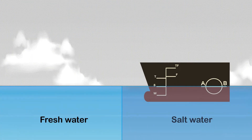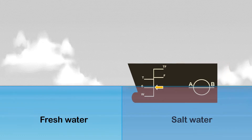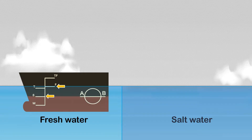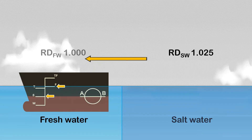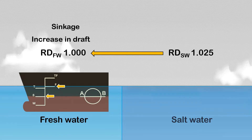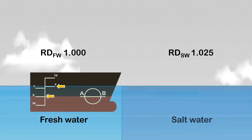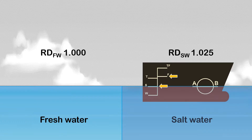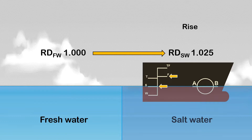Let's say the ship is floating in saltwater at her summer load displacement, meaning the waterline is on the upper edge of the S load line mark. When the ship arrives in freshwater, the waterline will be on the upper edge of the F load line mark, disregarding changes in draft due to fuel, water consumption, and other consumables. This shows that moving from higher to lower density water causes the ship to sink, increasing her draft. Conversely, when floating in freshwater at the F load line and arriving in saltwater, the waterline moves to the S load line, and the ship rises, decreasing her draft.